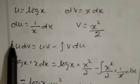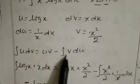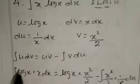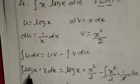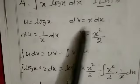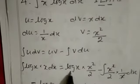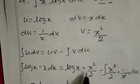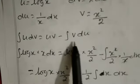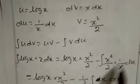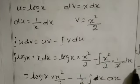We apply the formula: integration of u dv equals uv minus integration of v du. So instead of u we write log x, instead of dv we write x into dx. That equals log x into x squared divided by 2, then minus integration of x squared by 2 into 1 by x into dx.